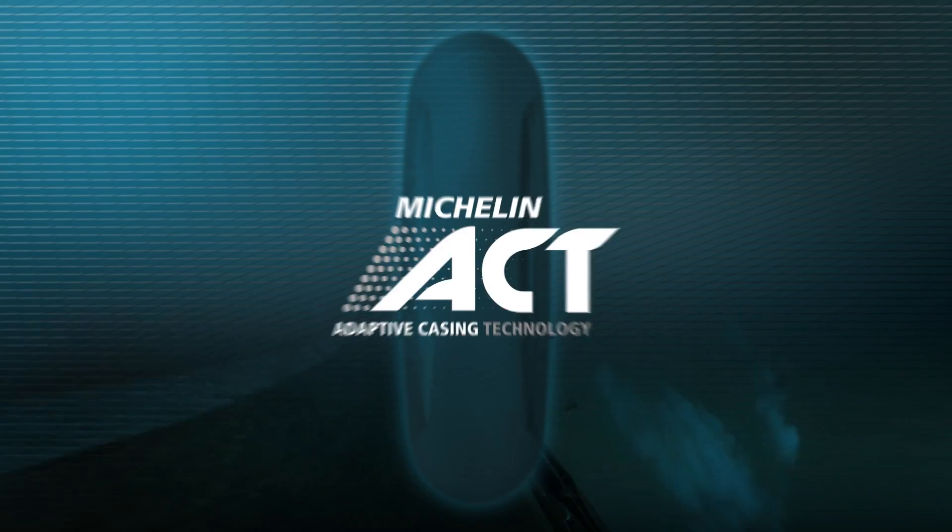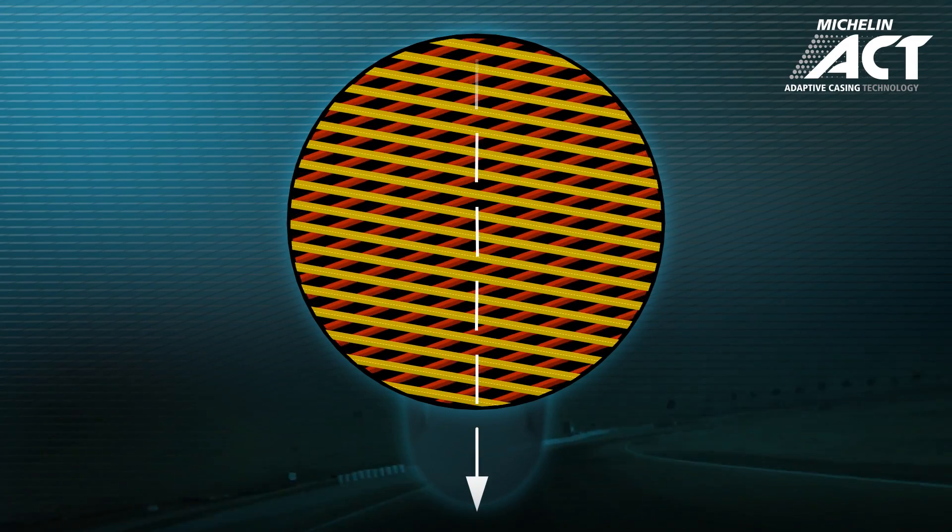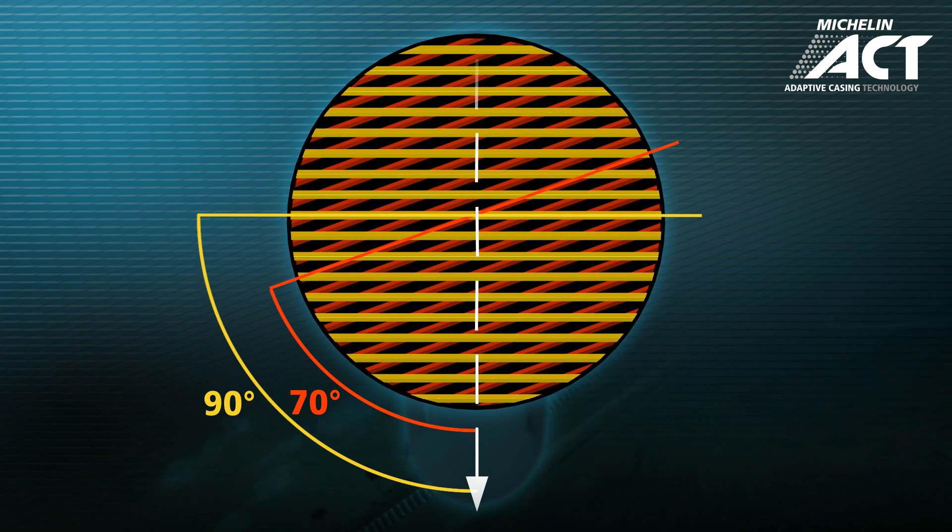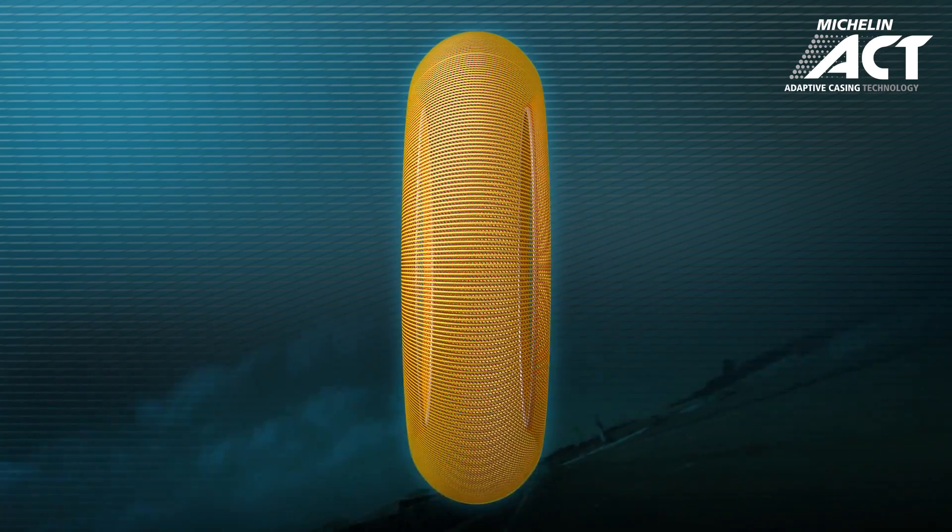With Michelin ACT, Adaptive Casing Technology, the plies are laid at different angles, but to the same side. One at minus 70 degrees and the other at minus 90 degrees. Because of the small difference between these two angles, the crown is not very rigid.